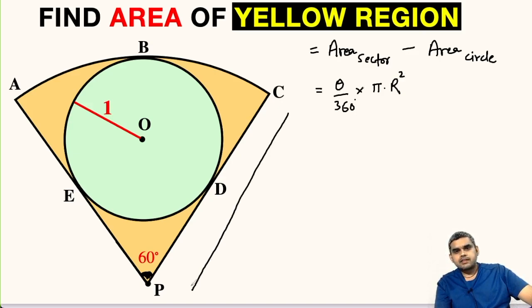Let us take this radius as R and area of the small circle will be pi times the square of its radius r, which is already given to us as 1 unit. Theta is already given to us as 60 degrees, and if we know the value of this capital R, we can compute the area of sector and hence we can find the area of this yellow region.